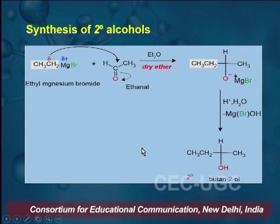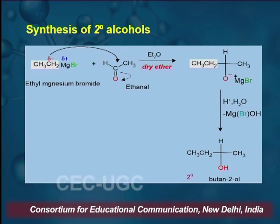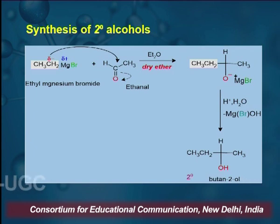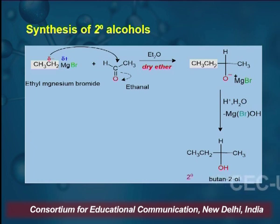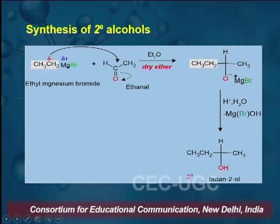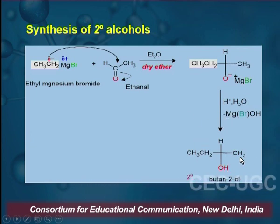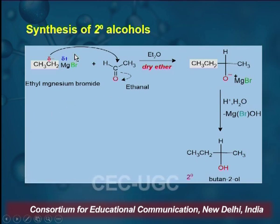For synthesis of secondary alcohol, other than formaldehyde, all aldehydes result in the formation of secondary alcohol. For example, ethyl magnesium bromide on reaction with acetaldehyde in the presence of dry ether results in the Grignard Reagent, and on hydrolysis gives a secondary alcohol. Here, the methyl group comes from the aldehyde and the ethyl is part of the Grignard Reagent. To prepare another secondary alcohol, you have to alter either the aldehyde or the ethyl magnesium bromide or both, depending on the desirable product.